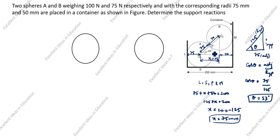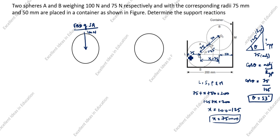Now we have theta equal to 53 degrees. We will draw the free body diagram of sphere A. The self-weight of sphere A is 100 Newton, always acting downward through the center. Support reaction RL is always perpendicular to the plane — this is the container wall — so we draw RL in that direction.